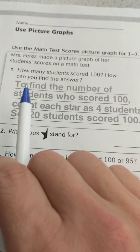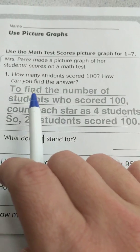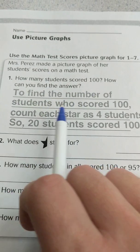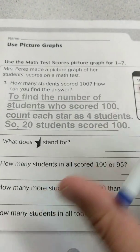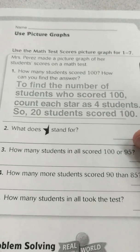I have a written explanation here that should match up with what I just counted. To find the number of students who scored 100, count each star as 4 students. So 20 students scored 100, just like I showed you.